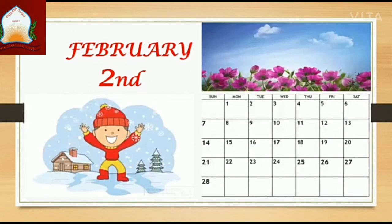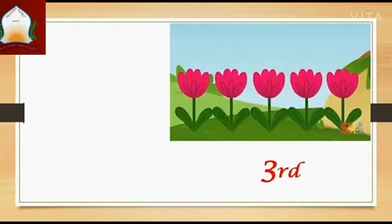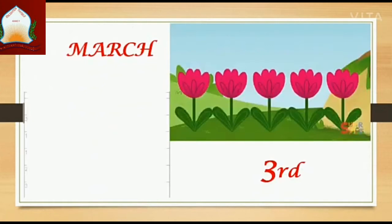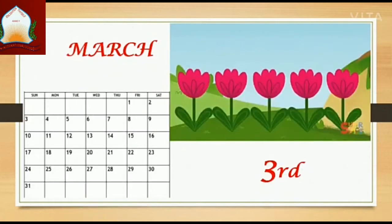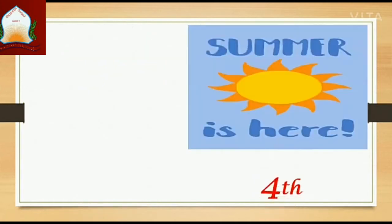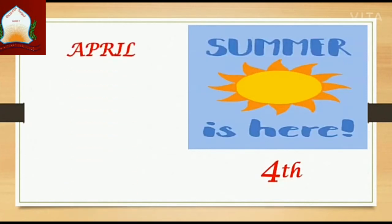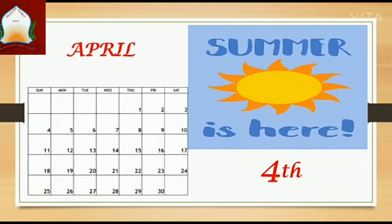Now the third month of the year is March. It has 31 days. Here comes the fourth month of the year, that is April. It has 30 days.